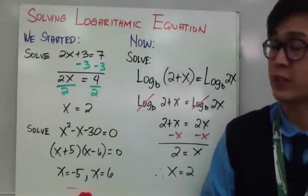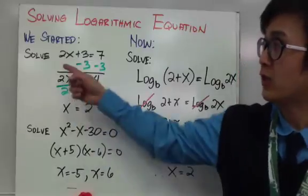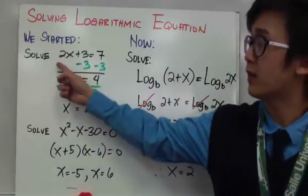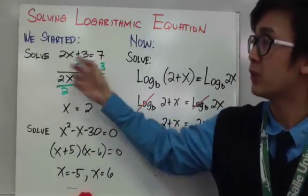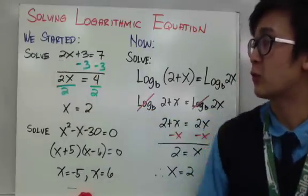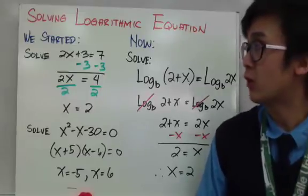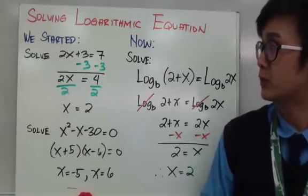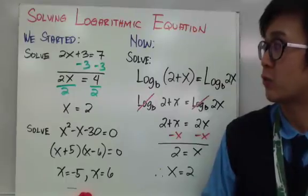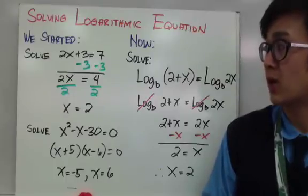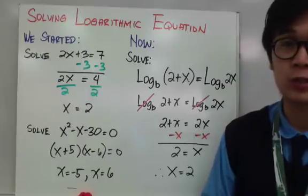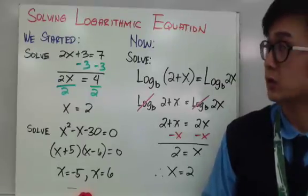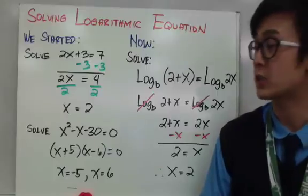Let's start with the linear equation. We're solving a simple linear equation like 2x plus 3 equal to 7. Solving for x is pretty simple — just subtract 3 on both sides, then divide both sides by 2, so x is equal to 2. That's how we solve a linear equation.